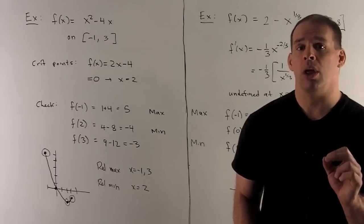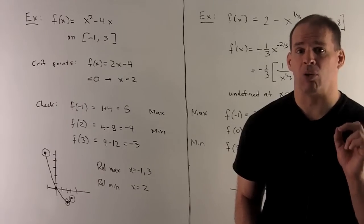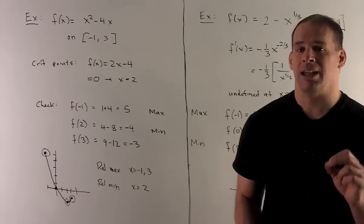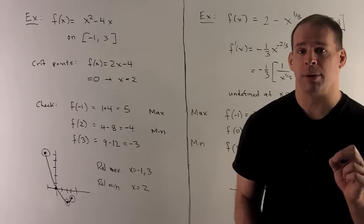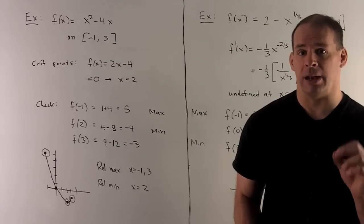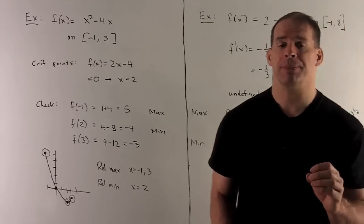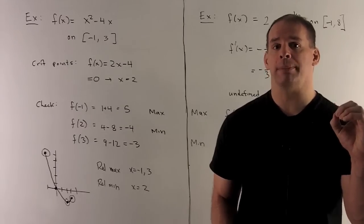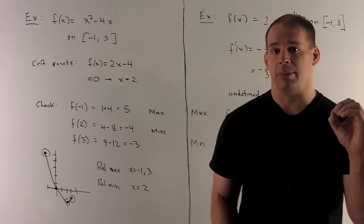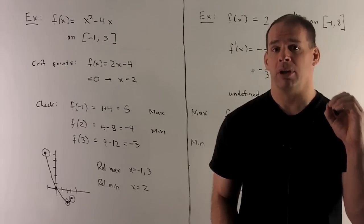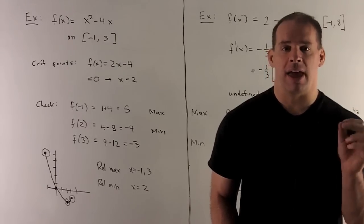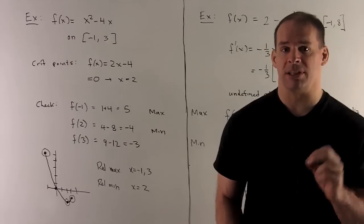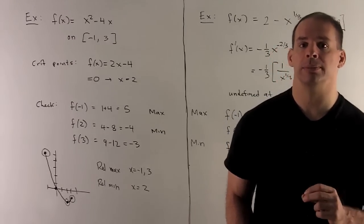Going one level further, relative maximums occur at the endpoints — draw a circle and that point is the maximum inside the circle. The relative minimum is the same as our overall minimum at x equals 2.